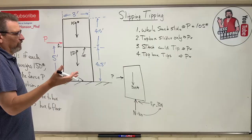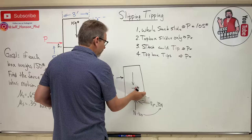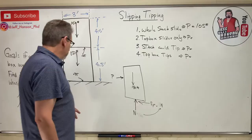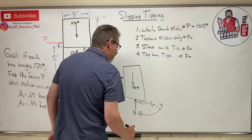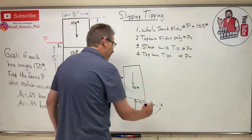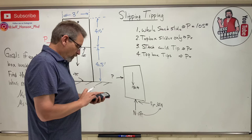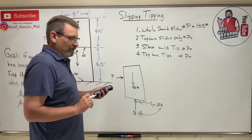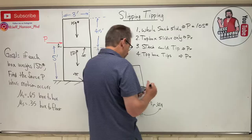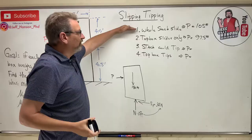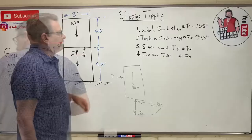Now let's try top box slides only. Redrawing the free body for just the top box — it's 150 pounds. N is now 150 pounds, and the static coefficient of friction is 0.65. So P equals 0.65 times 150 equals 97.5 pounds. The whole stack is not going to slide — the top box slides first at 97.5 pounds. We've got a new leader.